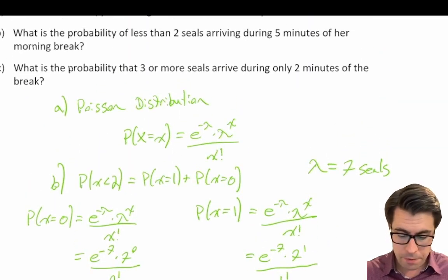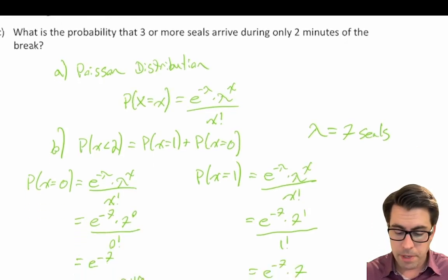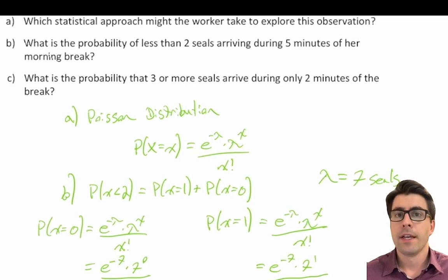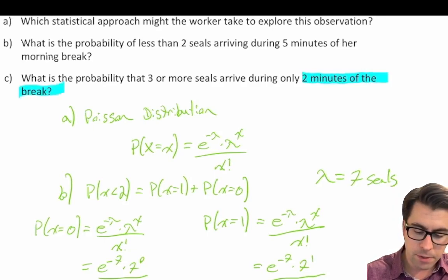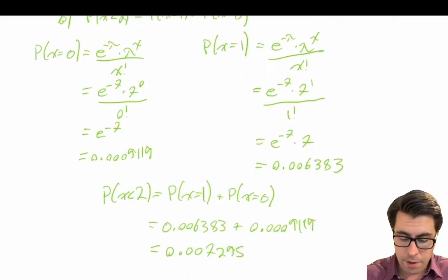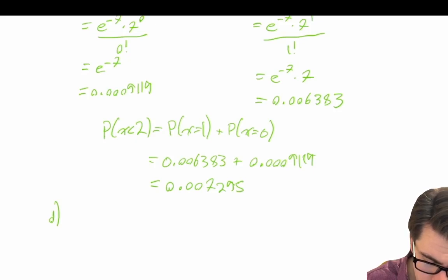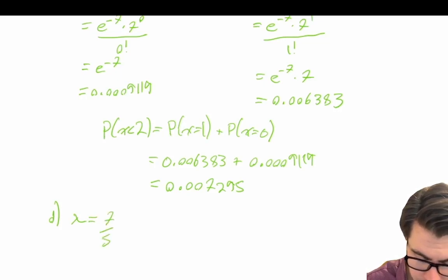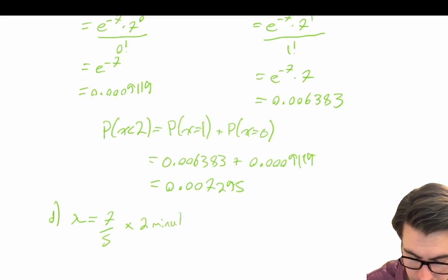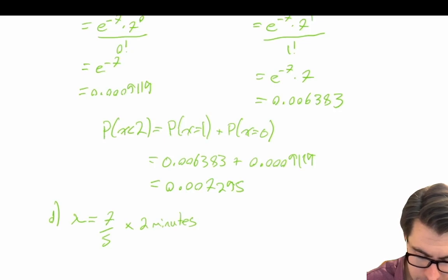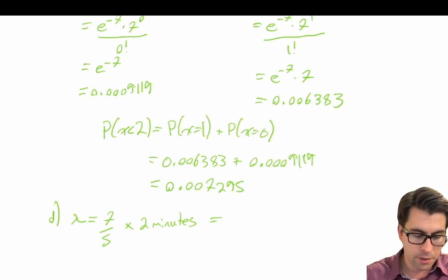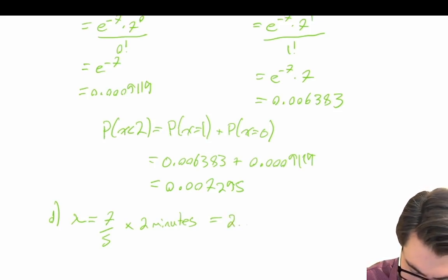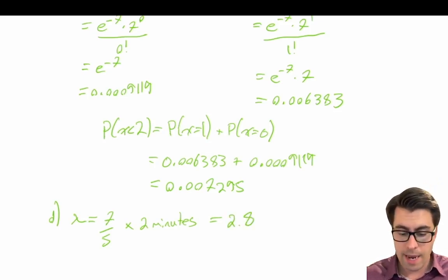Finally, Part C: what is the probability of three or more seals arriving during only two minutes of her morning break? We have to pay attention here because the unit of time has changed — it's no longer five minutes, it's two minutes. So we need to recalculate lambda. We take 7 seals divided by 5 minutes, times 2 minutes, which gives us a new lambda of 2.8 for the two-minute time period.